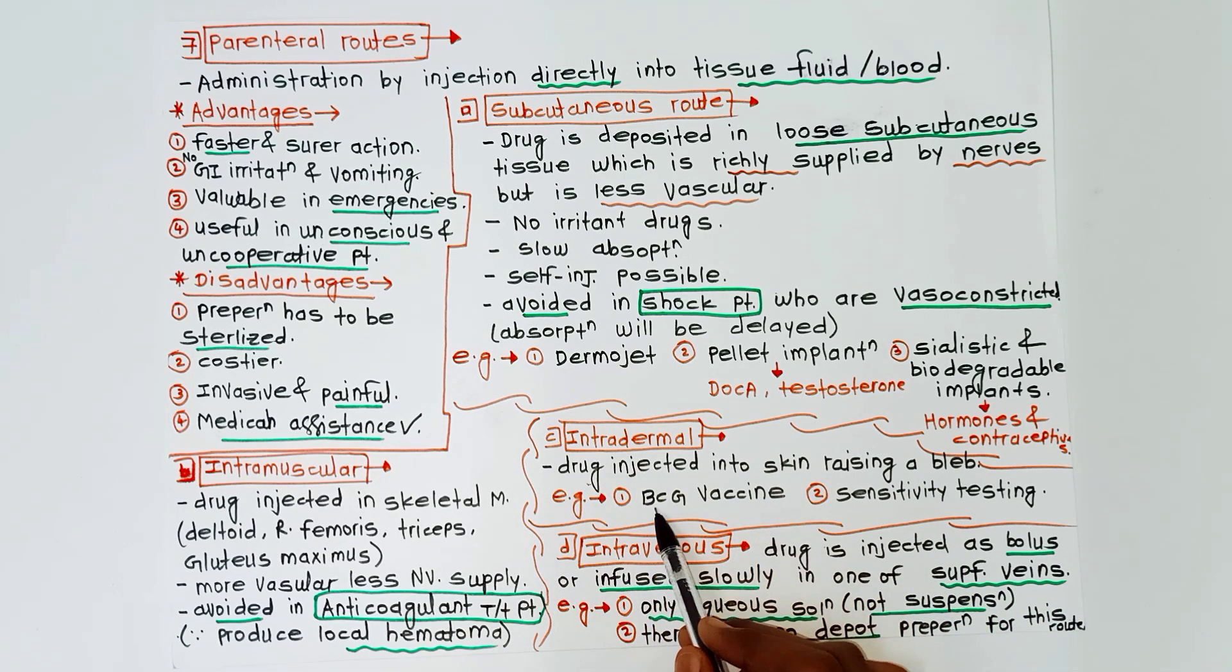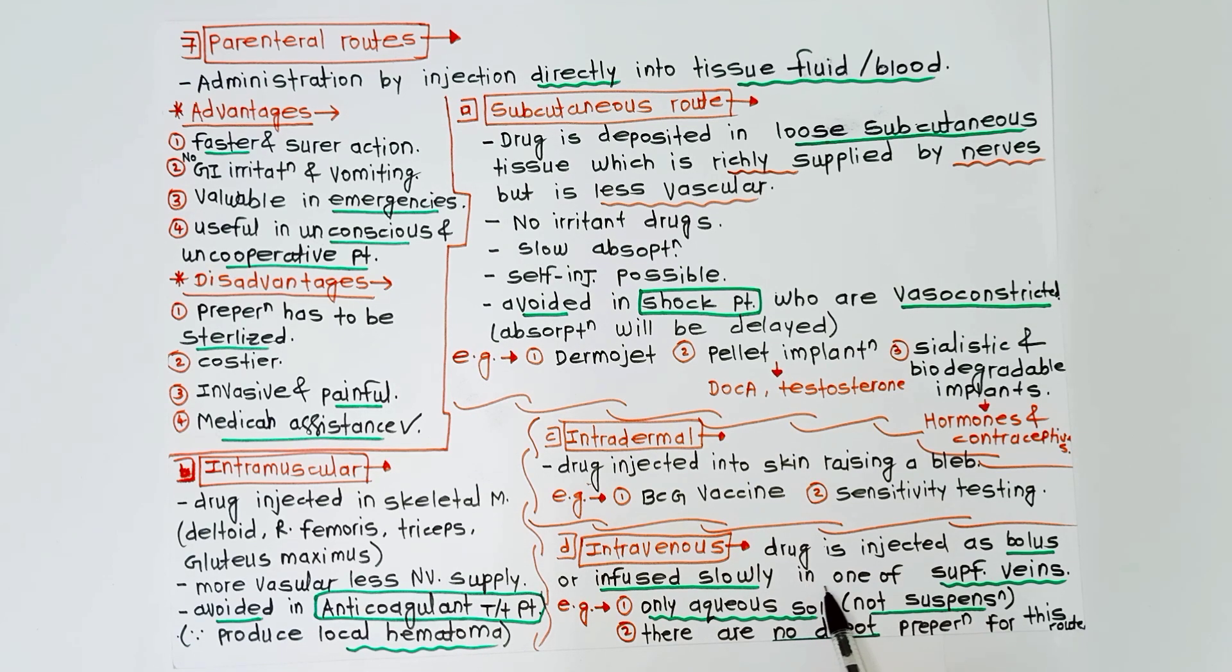Now the intravenous route. The drug is injected as a bolus or infused slowly in one of the superficial veins. Examples of this route are: only aqueous solutions are given by this route, not suspensions, and there are no depot preparations for this route.